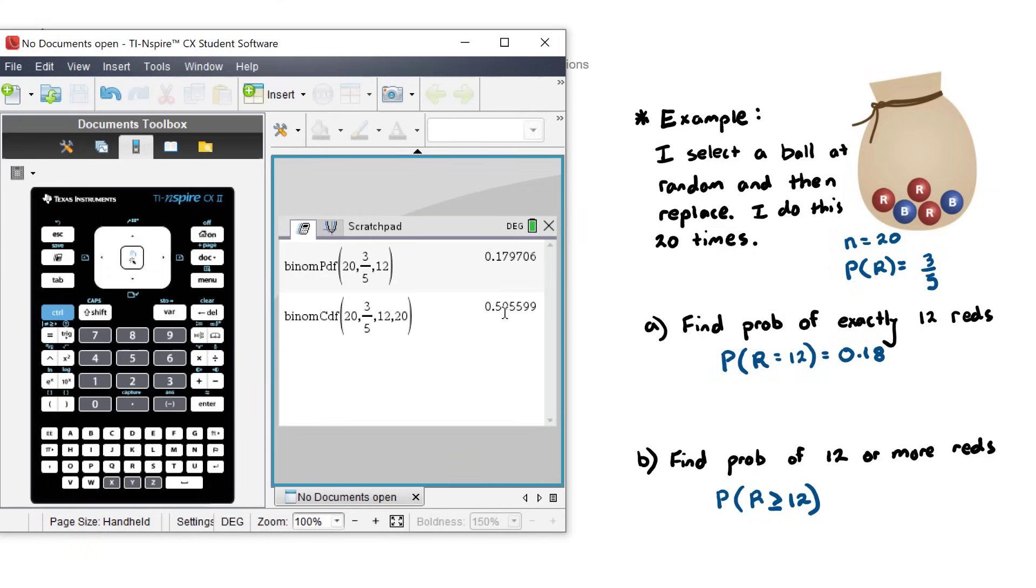We hit OK, and there is our probability. Zero point, oh, this is another tricky three significant figures. This rounds up, so it'll be, oh no, sorry. Three significant figures. My mistake. 0.596.